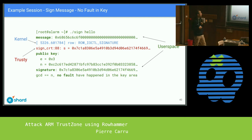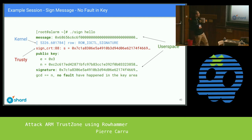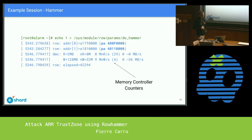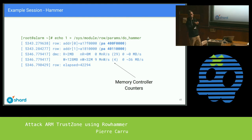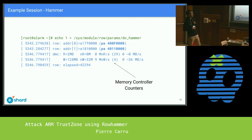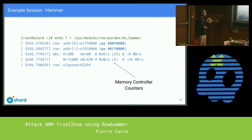Here is how the attack happens. We have a user space tool which sends a message to the trusted side. The trusted side generates a signature, and then the user space tool tries to compute the GCD. If it's equal to N, no faults have happened in the correct place and we cannot retrieve the key. If we do our Rowhammer attack — we access rows at specific addresses which will generate faults in nearby memory areas. We also have counters from the DRAM controller telling us how many reads per second we achieve, which is critical — if you can't do enough accesses per second, the attack won't succeed.